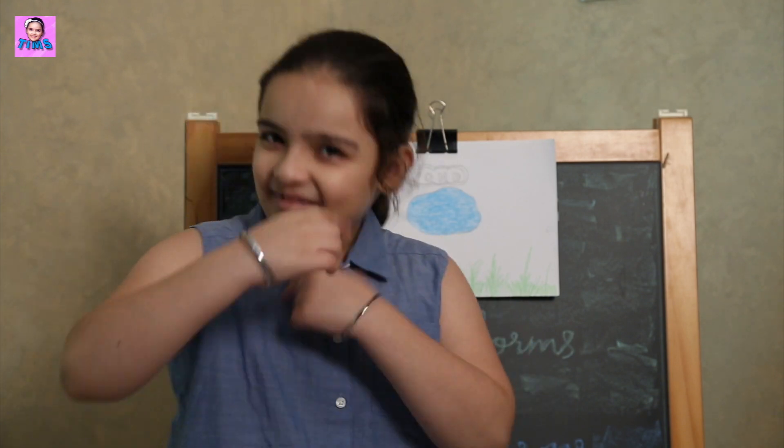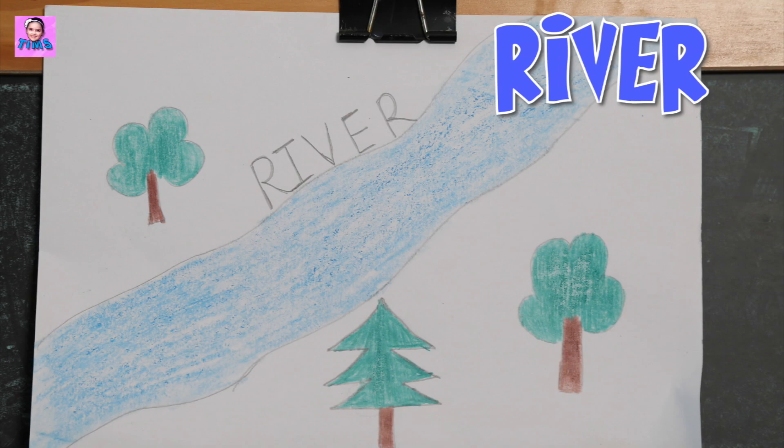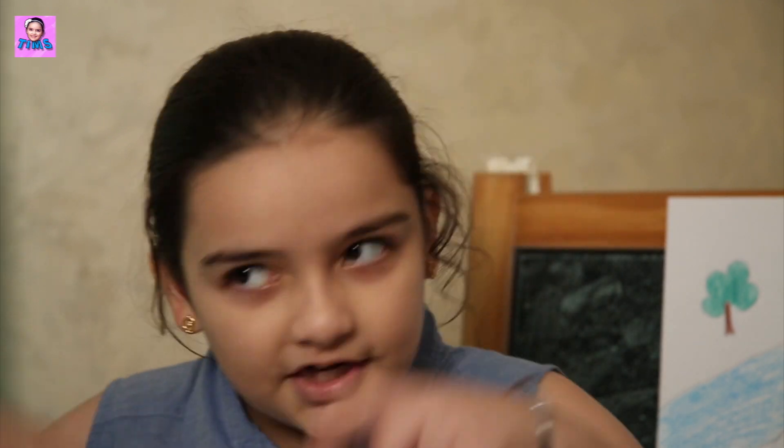Now moving on is river. A river is a large flowing body of water which ends in the sea. The longest river in the world is the Amazon river. And you might have heard of three famous rivers in India: Ganga, Yamuna, and Saraswati.